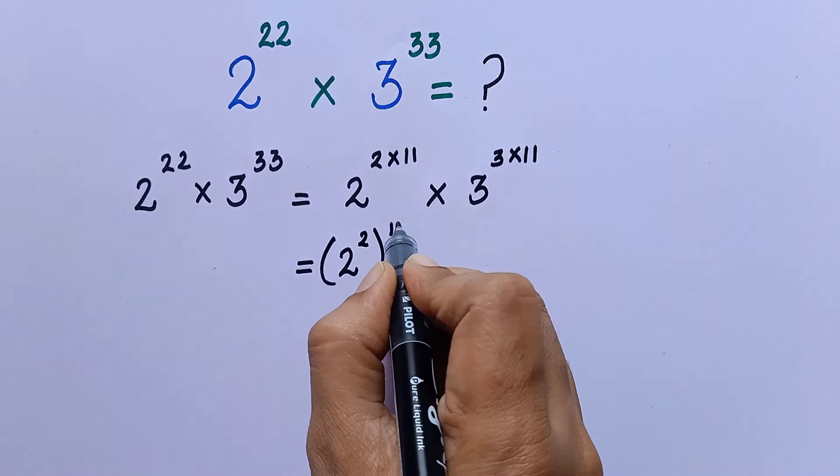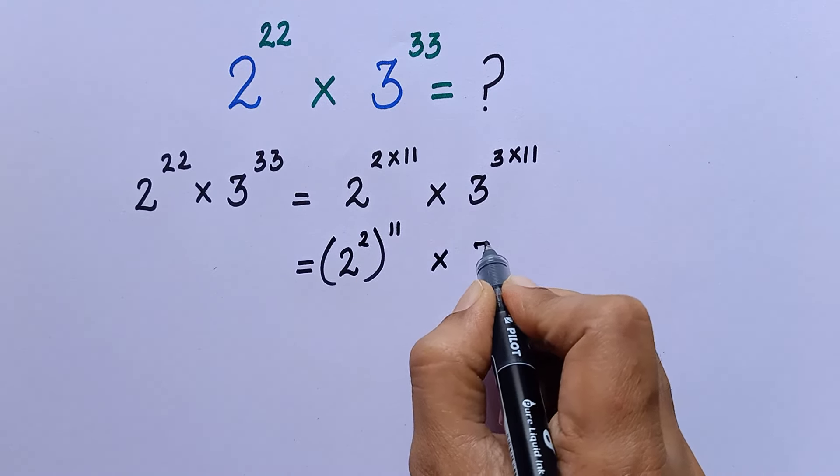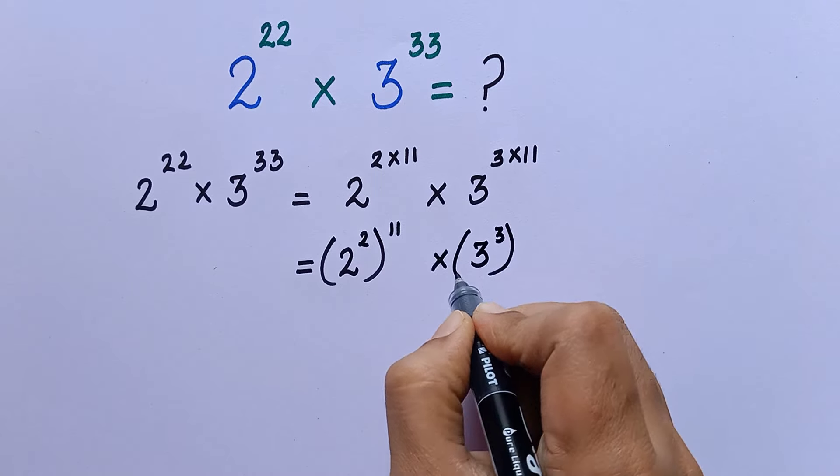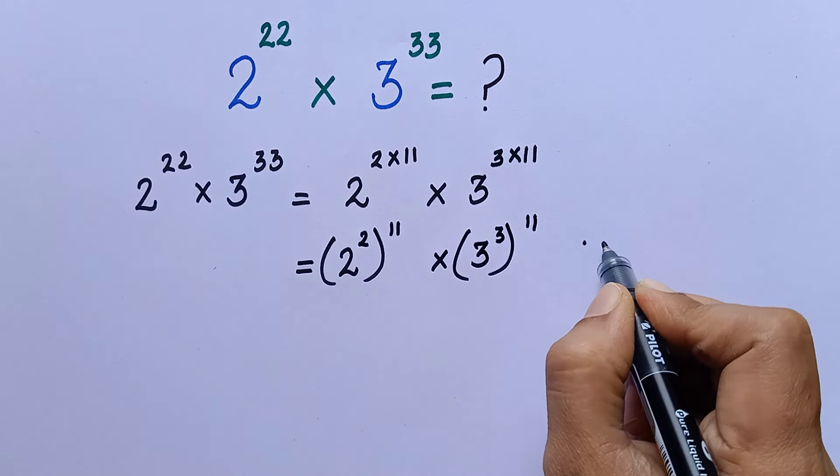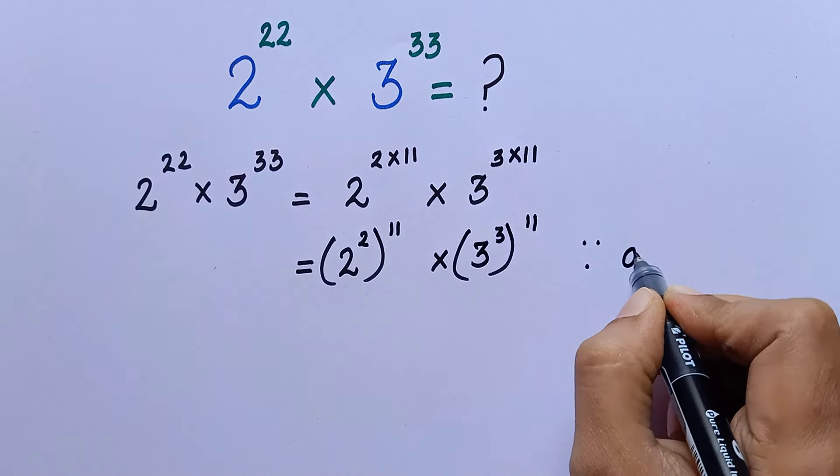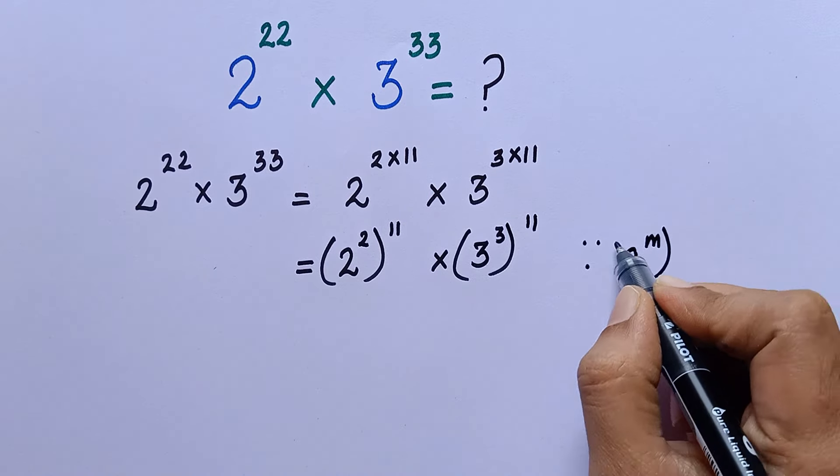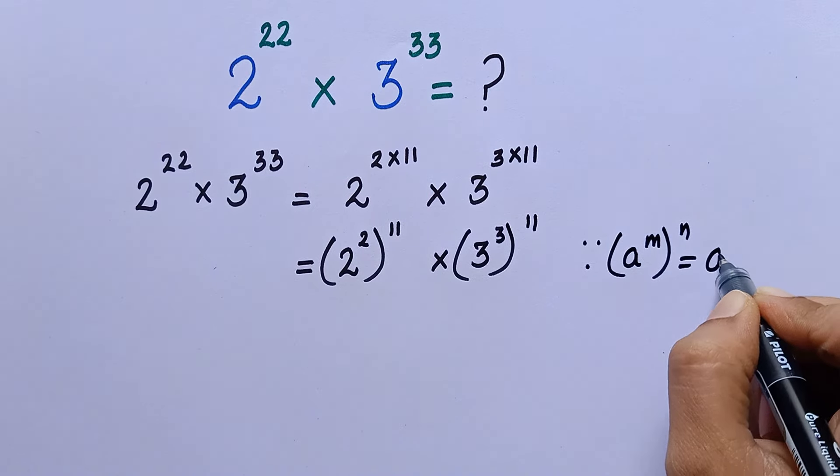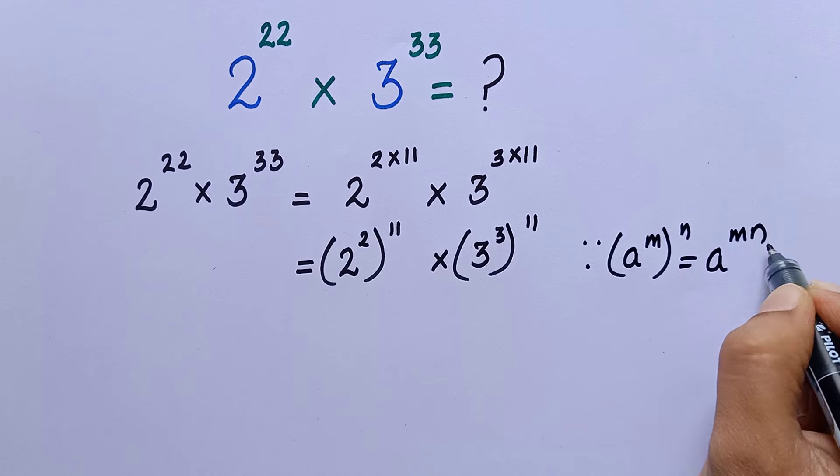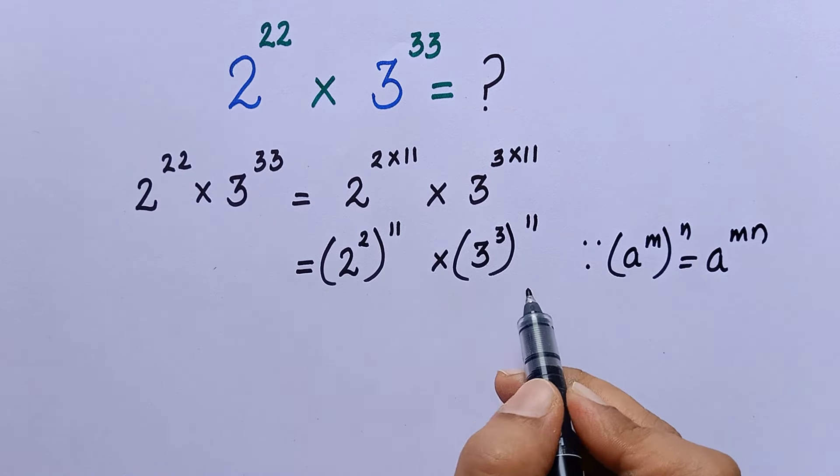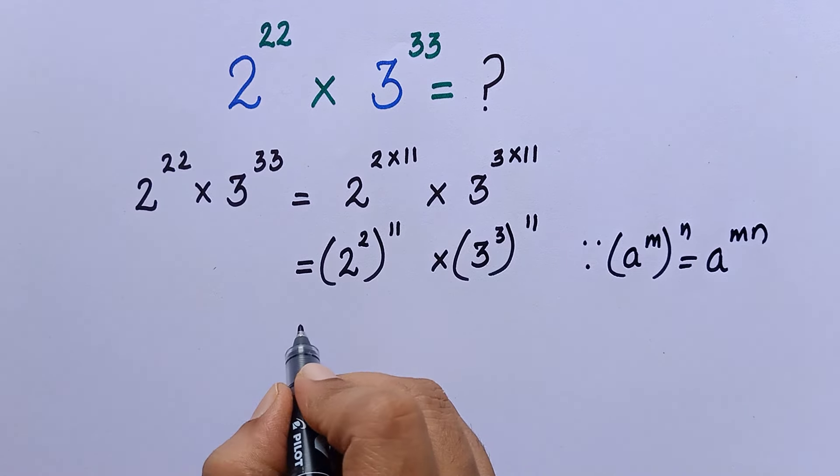This is from one of the laws of exponents: (a to the power of m) whole to the power of n equals a to the power of m into n. So using this, we have written 2 square to the power of 11 into 3 cube to the power of 11.